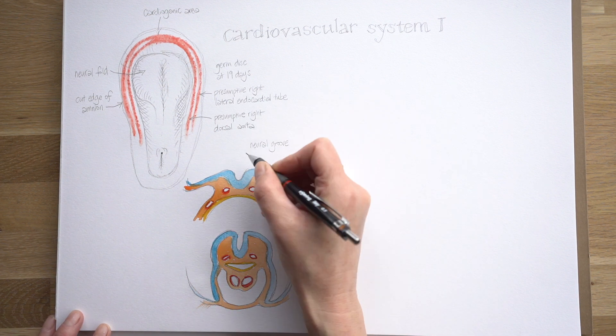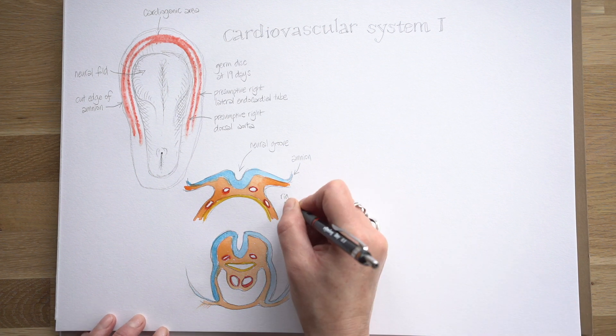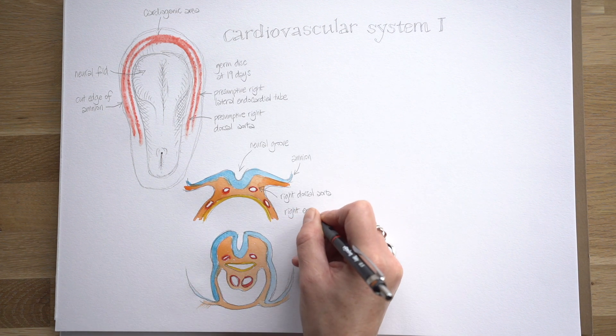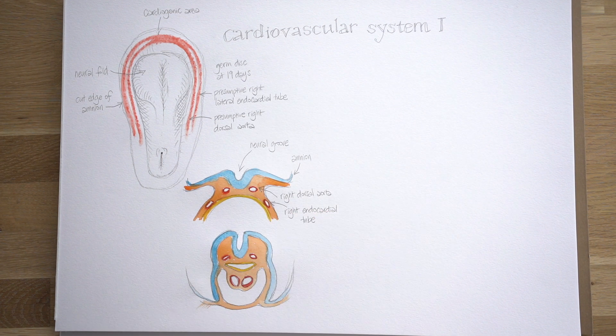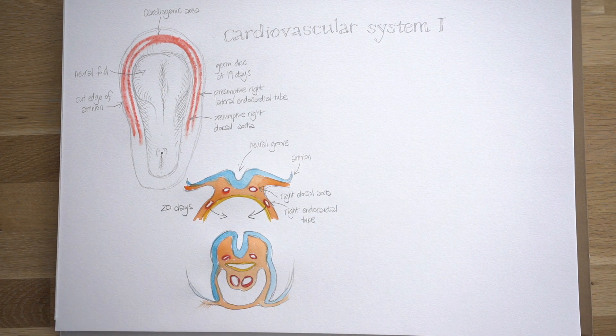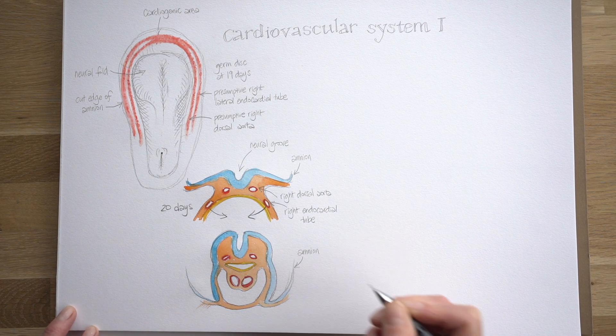Let's add some labels then. We've got the cut edge of the amnion. That's the neural groove forming just there. That's the right dorsal aorta and that's the right endocardial tube and this embryo is starting to fold in. That's 20 days. We're just towards the end of the third week of development.